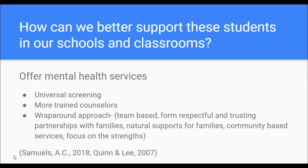So how can we better support these students in our schools and classrooms? One suggestion the research highlights is offering mental health services in schools. Universal screening is one good way to check whether students have any concerning signs that might indicate an emotional behavior disorder, which could help schools identify students earlier than what's currently happening.